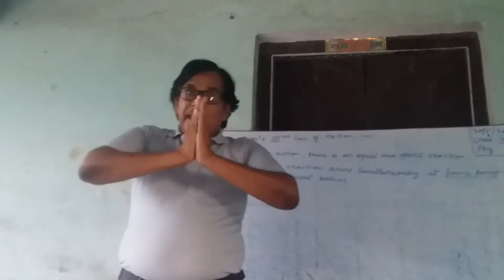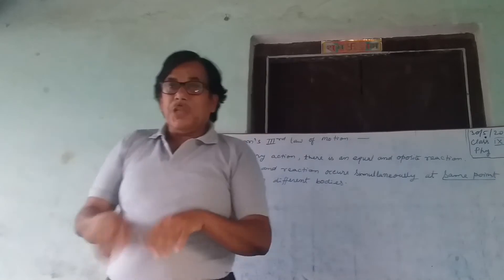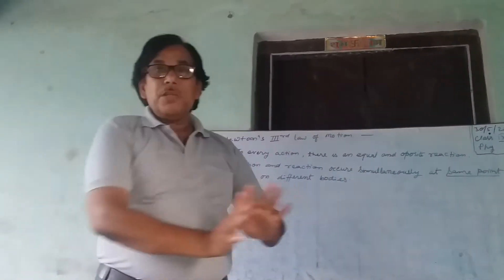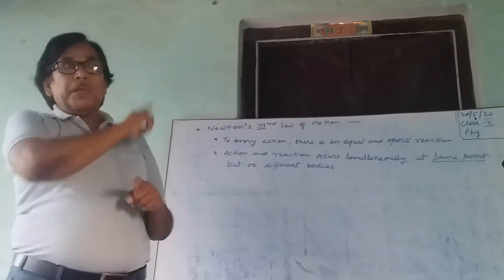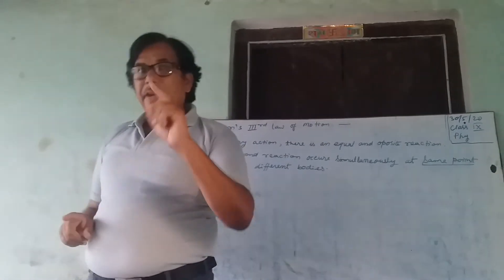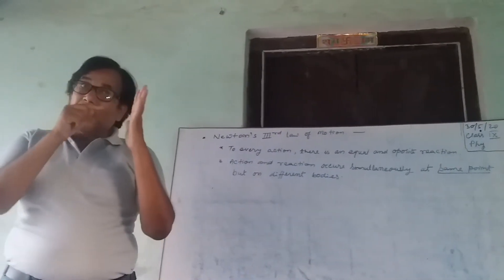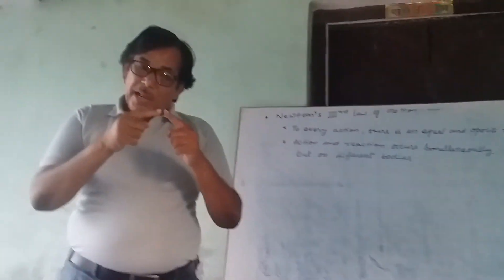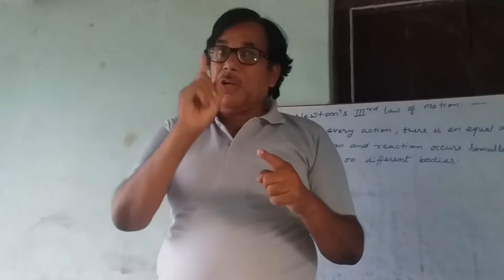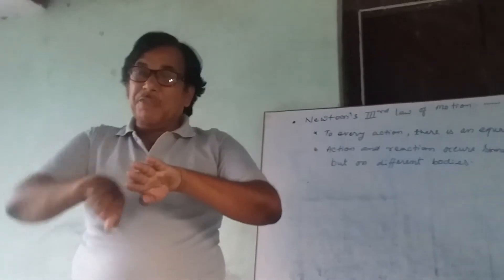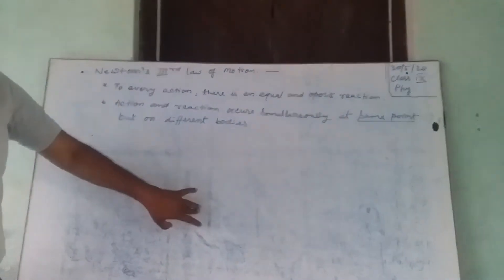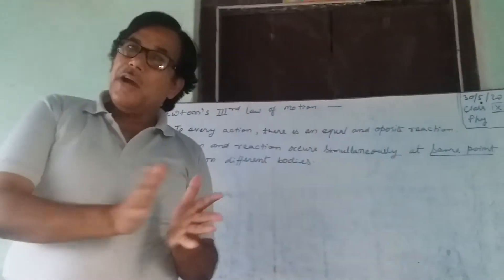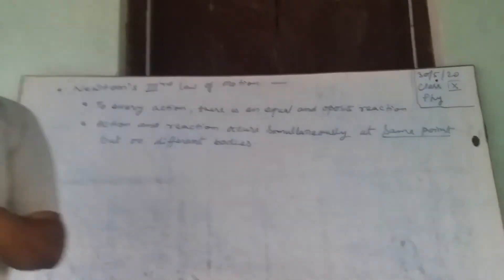If action and reaction are equal and opposite, then why does somebody move on applying force? It is because action and reaction never occur on the same body. Action and reaction occur at the same point, but on different bodies. If the action is on the board, then the reaction is on our hand.